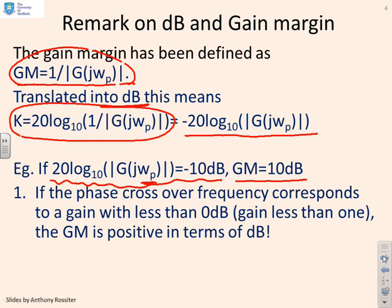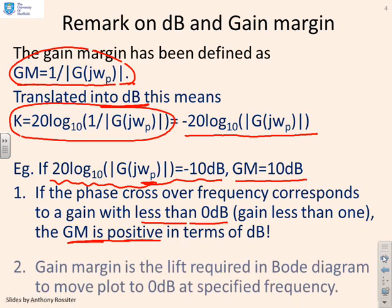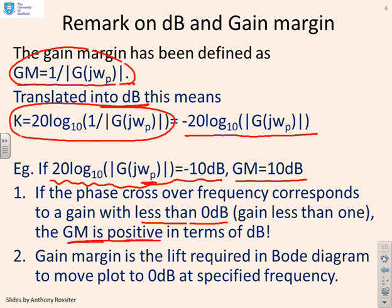Here's a key note: if the phase crossover frequency corresponds to a gain of less than 0 decibels — meaning the modulus of G is less than 1 — then the gain margin is positive, which is usually a good thing. The gain margin is the lift required in the Bode diagram to move the plot to 0 decibels at that specified frequency. All these statements are consistent with each other.